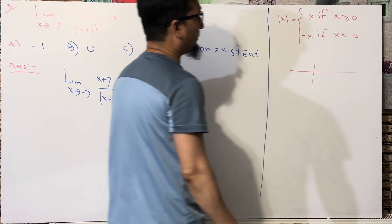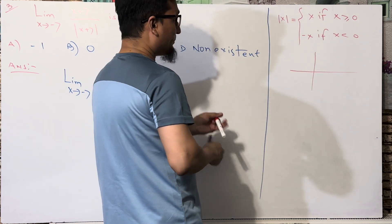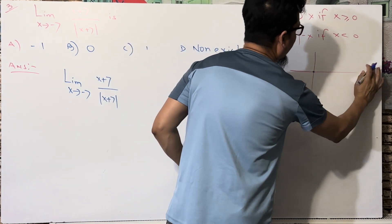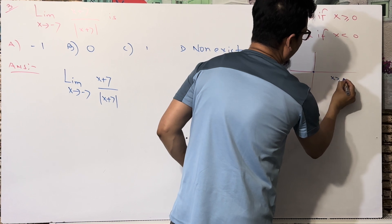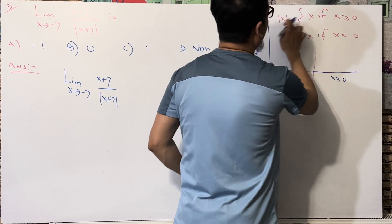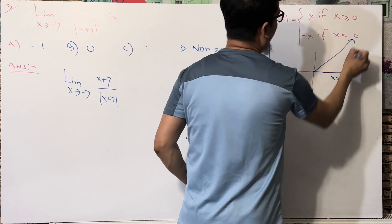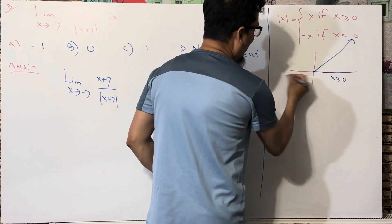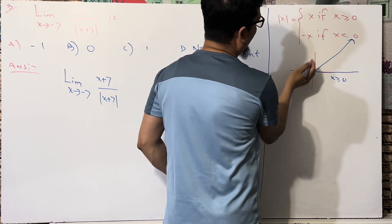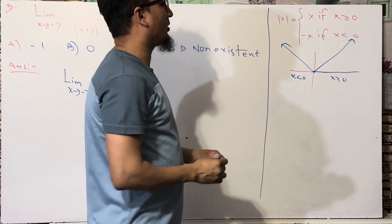As you can see on the graph: if you are on this side, meaning x is greater than or equal to 0, then this equals x, which is a straight line. And if you are on the other side, meaning x is less than 0, then this equals minus x. That is the graph of the absolute function.